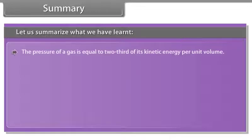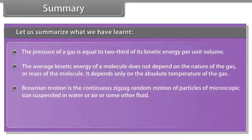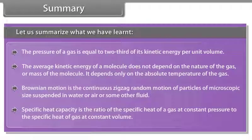The pressure of a gas is equal to two third of its kinetic energy per unit volume. The average kinetic energy of a molecule does not depend on the nature of the gas or mass of the molecule. It depends only on the temperature of the gas. Brownian motion is the continuous zigzag random motion of particles of microscopic size suspended in water or air or some other fluid. Specific heat capacity is the ratio of the specific heat of gas at constant pressure to the specific heat of gas at constant volume.